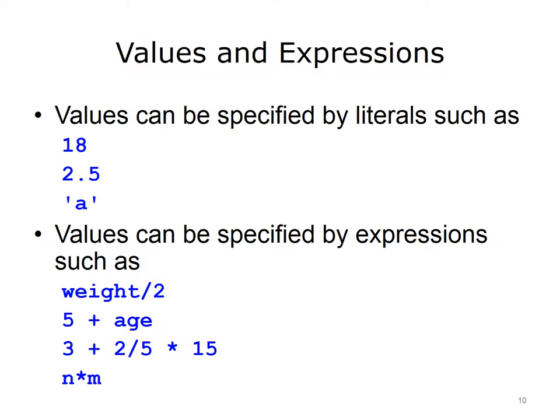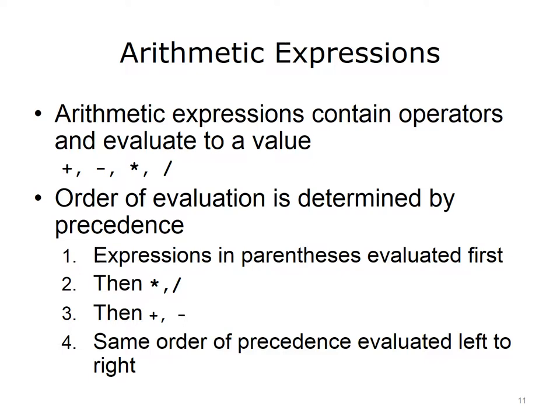For example, the value of the variable weight divided by 2 is an expression, as is 5 plus the value of the variable age. An expression can be made up of all literals, such as 3 plus 2 divided by 5 multiplied by 15, or it can be made up of all variables, such as the values of variables n and m multiplied together. Arithmetic expressions are combinations of arithmetic operators, literals, and variables that evaluate to a value. The arithmetic operators include plus, minus, multiply, and divide. The order in which these operators are evaluated is determined by precedence. Any expression in parentheses is evaluated first, then any multiplies and divides, and then the adds and subtracts. If all operators have the same order of precedence, the expression is evaluated left to right.